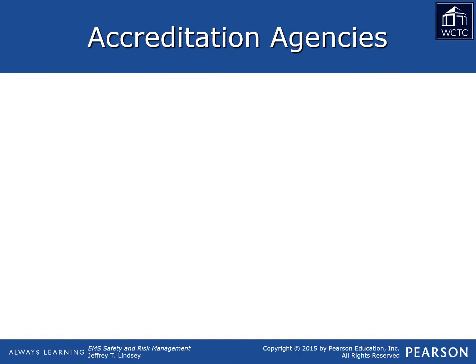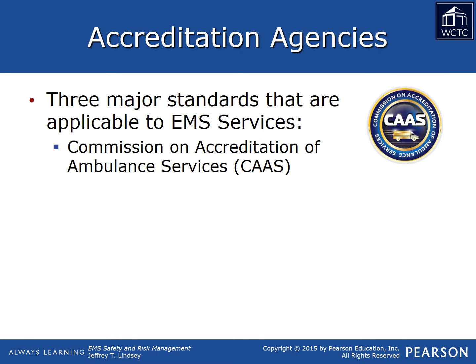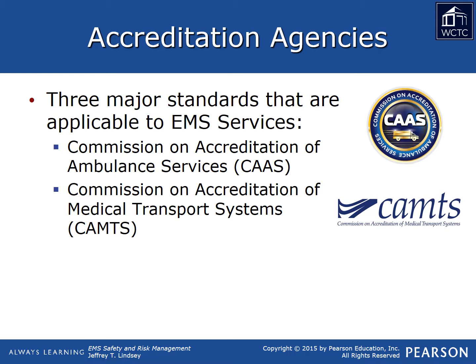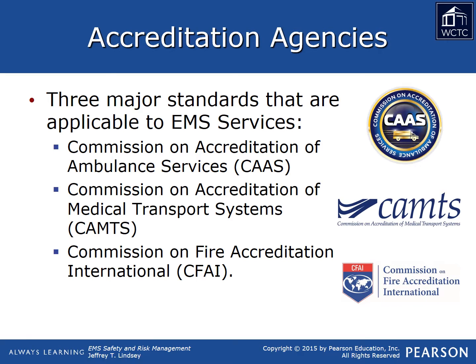There are quite a few resources available to EMS safety officers to help them minimize the risks associated with these hazards. One such resource includes accreditation agencies. There are three major standards applied to EMS agencies, including those maintained by the Commission on Accreditation of Ambulance Services, the Commission on Accreditation of Medical Transport Systems, and the Commission on Fire Accreditation International. These accreditation bodies strive to meet their own respective individual standards to achieve a level of service each agency considers to be minimally acceptable.